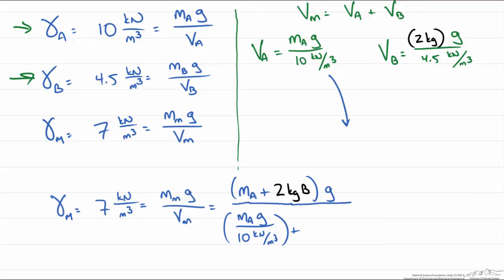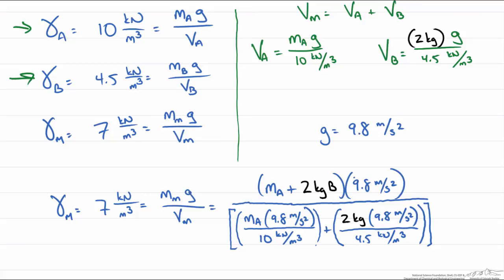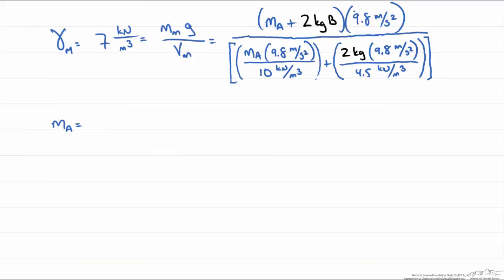If we use our gravity in this case since we are working with SI units of 9.8 meters per second squared, the only variable in this equation to solve for is the mass of A. At this point we use whatever method we want to solve for the mass of A. When you solve for the mass of A you should get 3.70 kg of A.